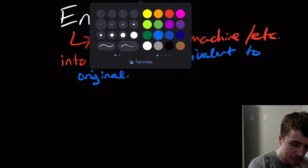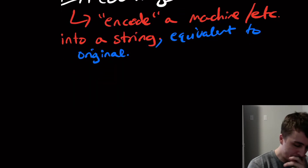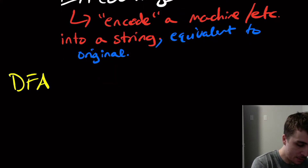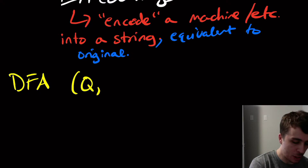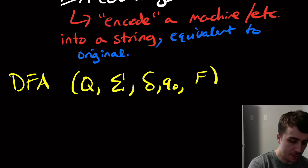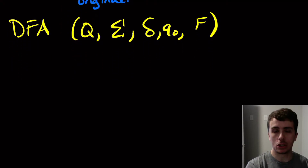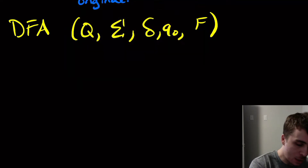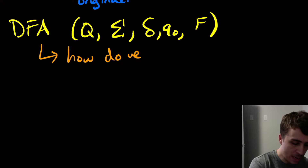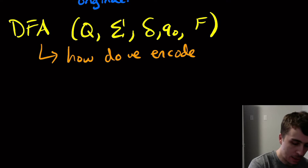So let's just do an example. Let's say that we have a DFA. I'm going to call it the five parts: Q, sigma, delta, Q-zero, and F — the five familiar pieces. The question is: how do we encode this as a string?